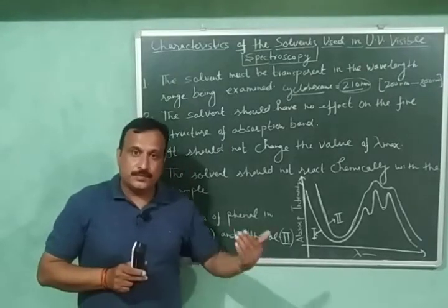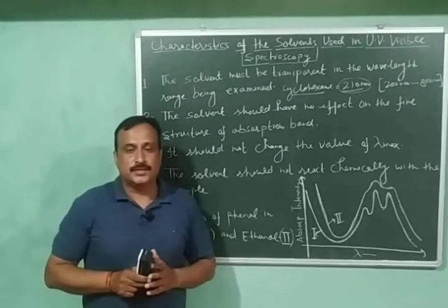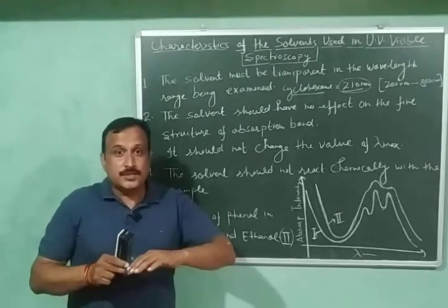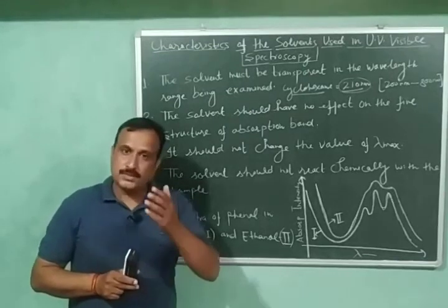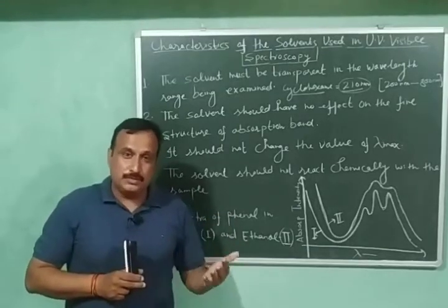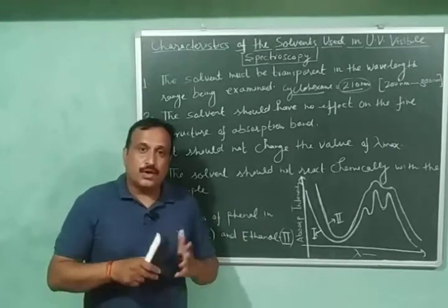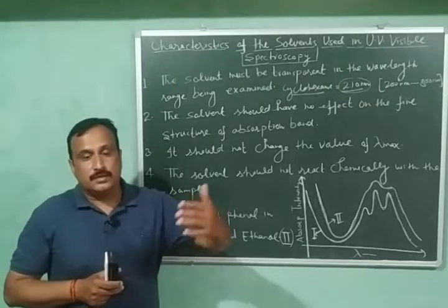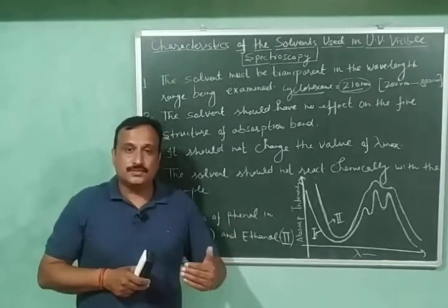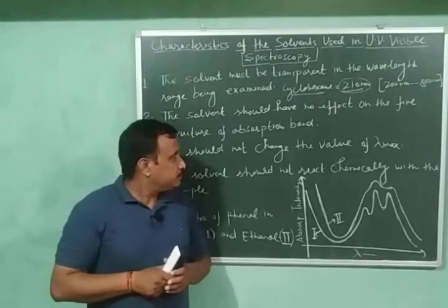And I want to tell you that the nonpolar solvents are generally preferred over polar solvents in UV visible spectroscopy. Because the polar solvents, they disturb the fine spectrum of the sample. Because there will be some dipole-dipole interaction between the solute and the solvent or the sample and the solvent. Or there could be the formation of hydrogen bonds between the sample and the solvent. And these type of interactions, they disturb the fine spectrum of the organic compound. So this is the reason.